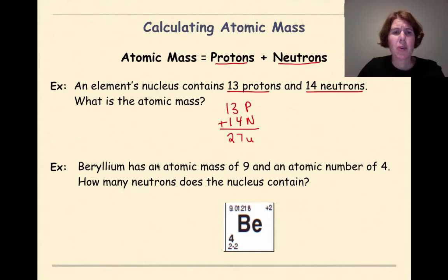Let's look at another example. Beryllium has an atomic mass of 9 and an atomic number of 4. How many neutrons does the nucleus contain? Well remember, atomic mass is equal to protons plus neutrons. In this example, that is 9. Now atomic number is the same thing as number of protons. So in this case, the number of protons will be 4.